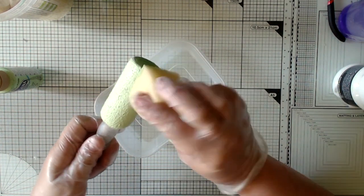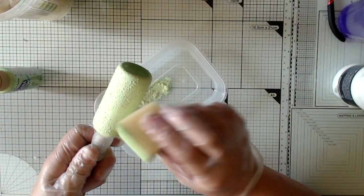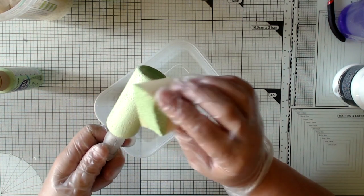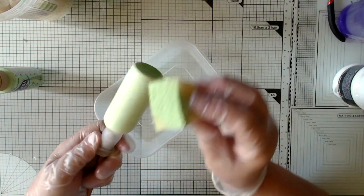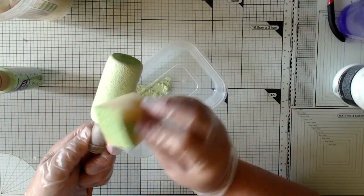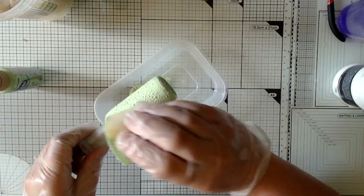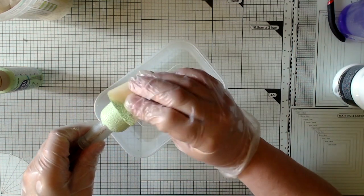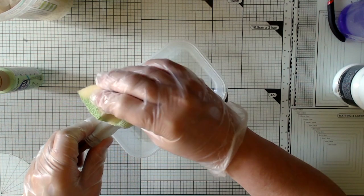I'm lightly dabbing that all over. I'm putting it on with one side and I'm taking some of it off with the other because I don't want it to really be more textured than the texture paste underneath, if I'm making sense to you.